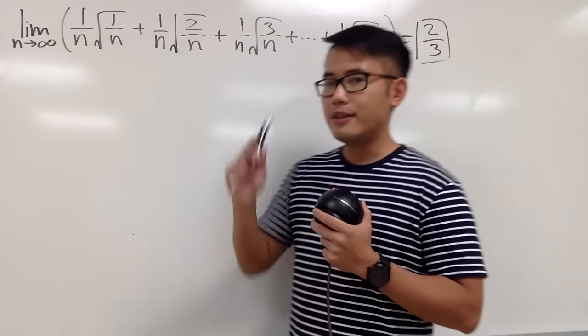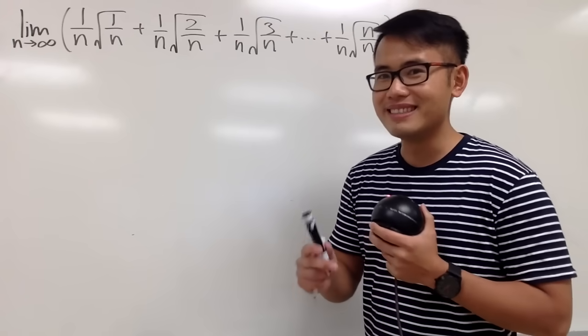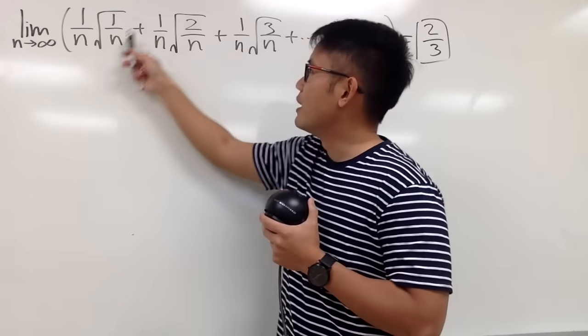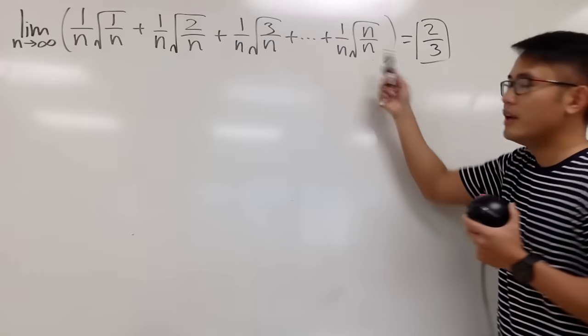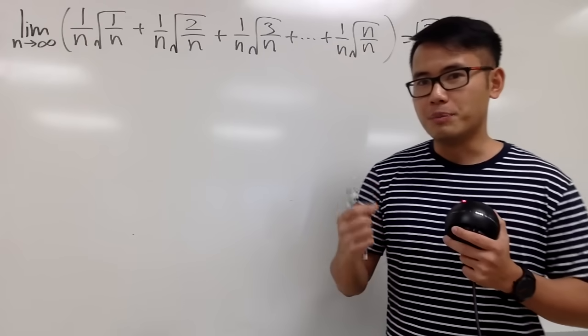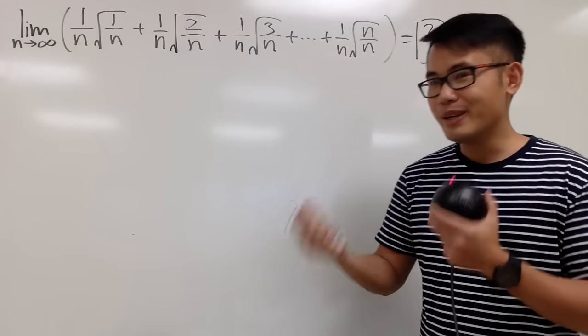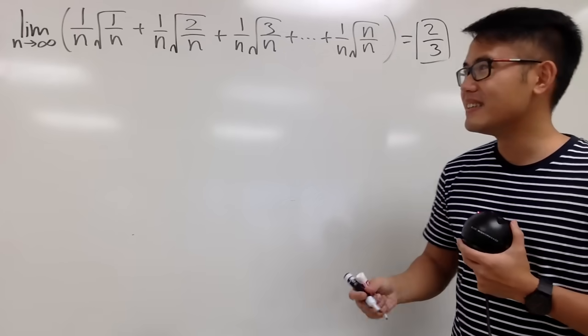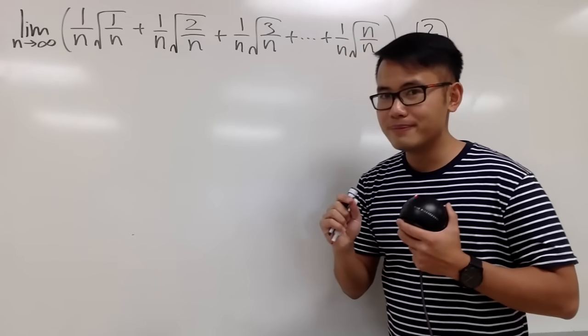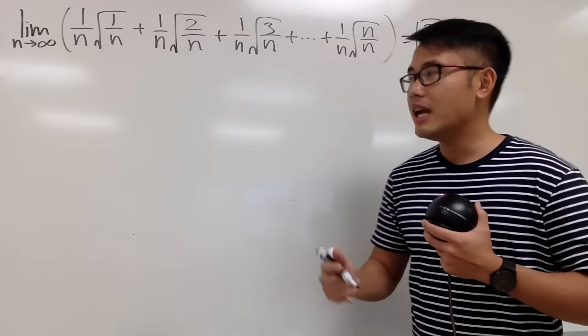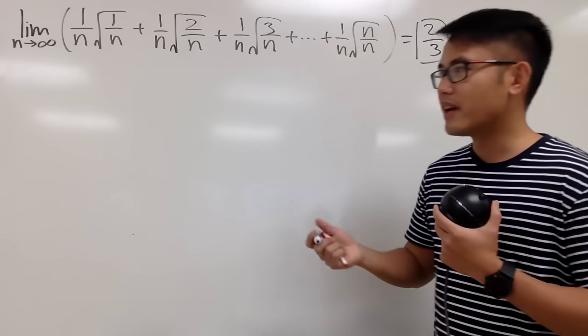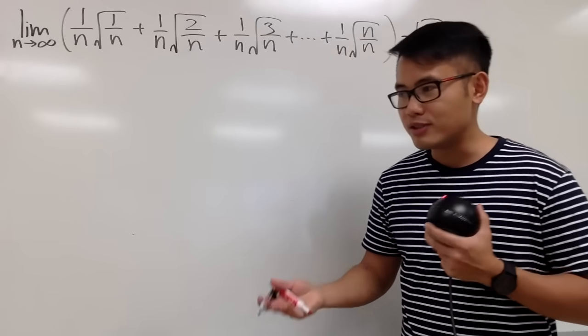But let me show you guys the easy way to do this. And the hint that I know this is the easy way to approach the limit is that I noticed we have the 1 over n, and we have 1 over n, 2 over n, 3 over n, and then n over n inside of the square roots. This right here is a Riemann sum from doing the integrations from scratch.